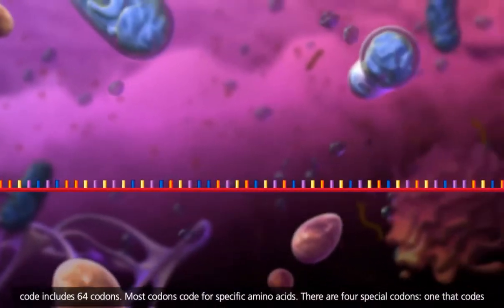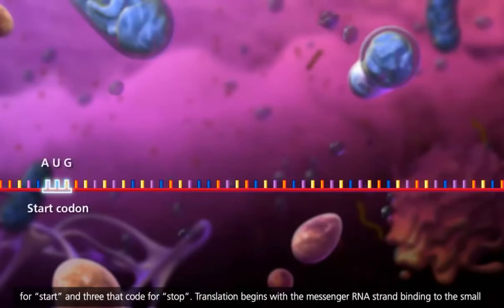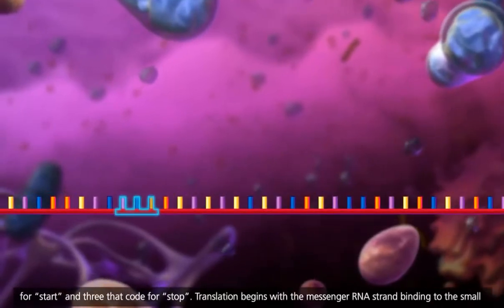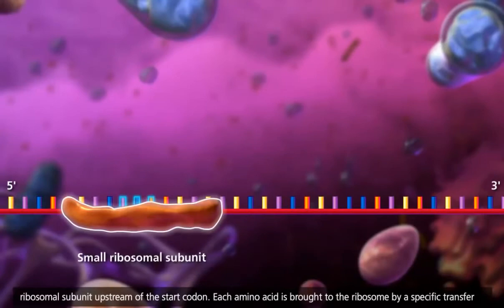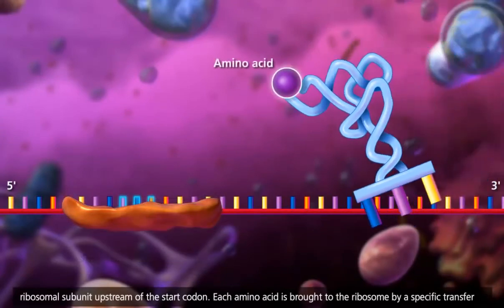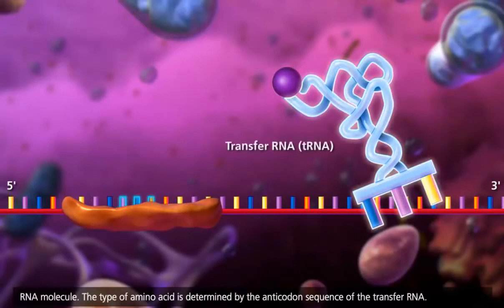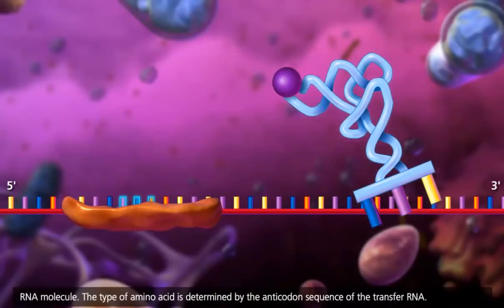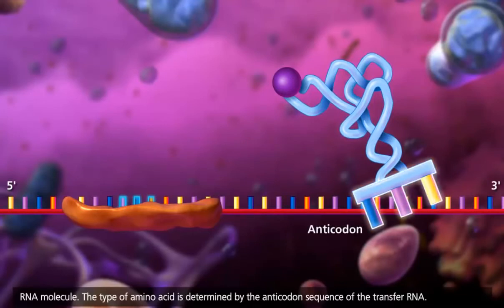There are four special codons, one that codes for start and three that code for stop. Translation begins with the messenger RNA strand binding to the small ribosomal subunit upstream of the start codon. Each amino acid is brought to the ribosome by a specific transfer RNA molecule. The type of amino acid is determined by the anticodon sequence of the transfer RNA.